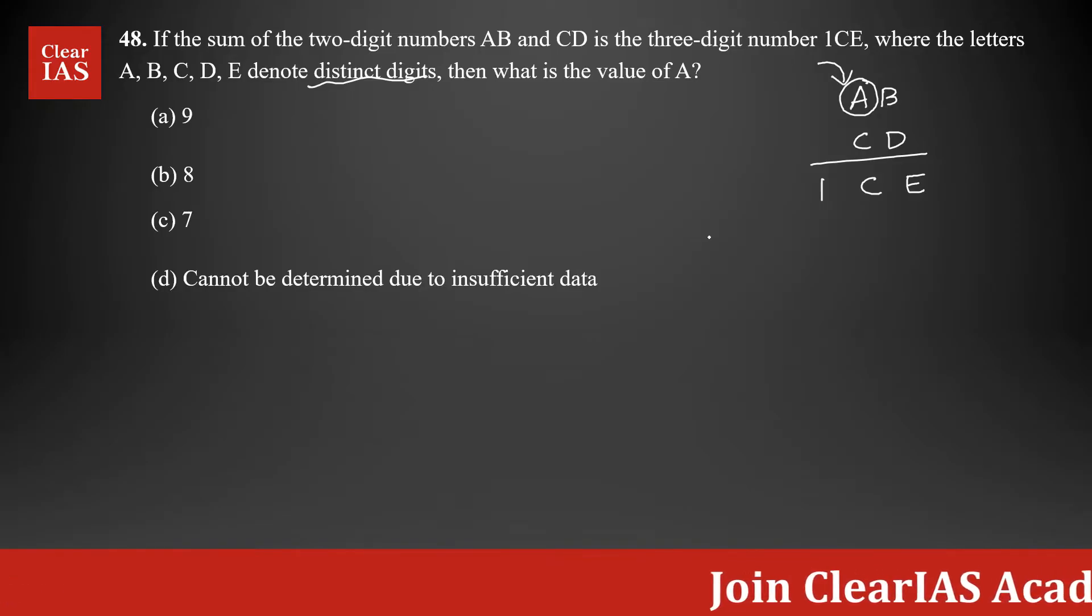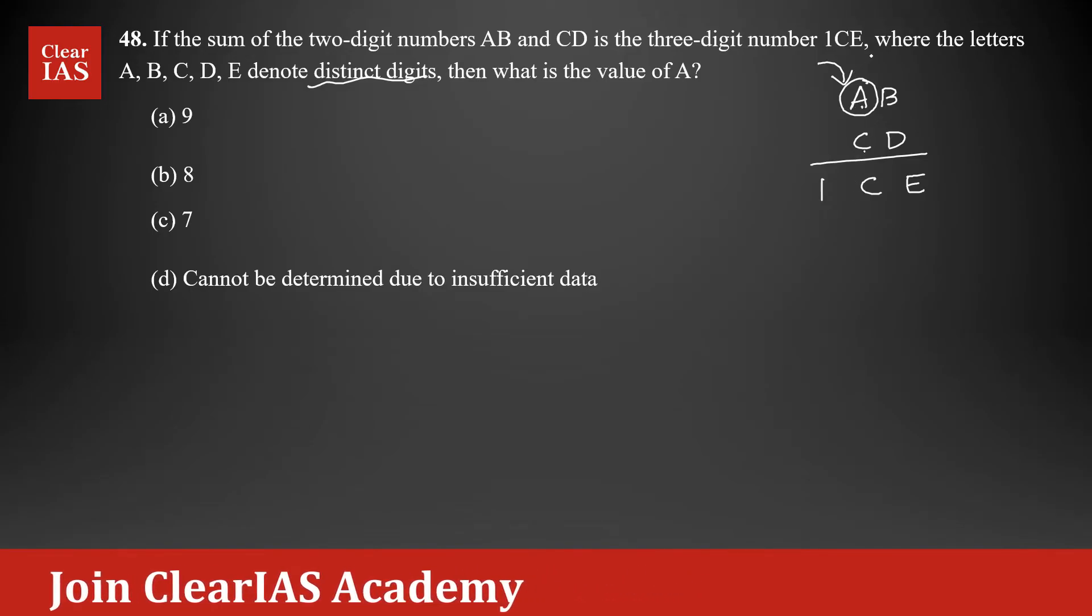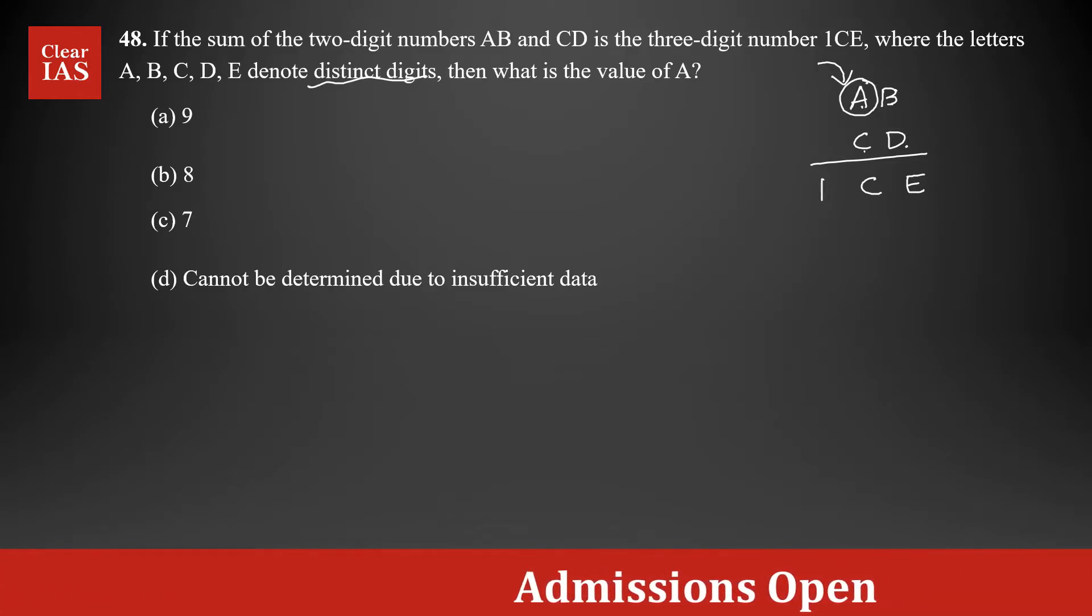So there are two scenarios. If you are adding these digits A and C, either there are two scenarios. One is when you add B and D, there is a carry, or there is a scenario where there is no carry. Maximum carry you are going to get is 1.